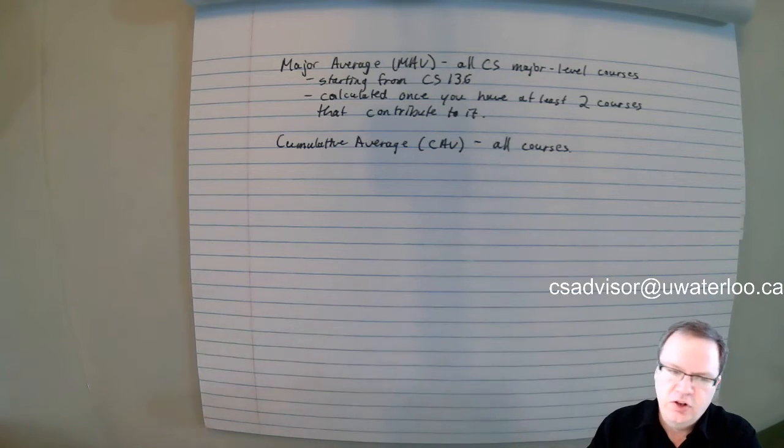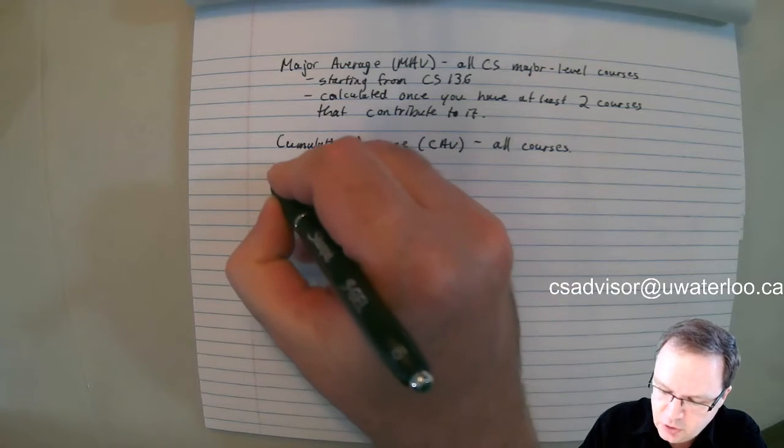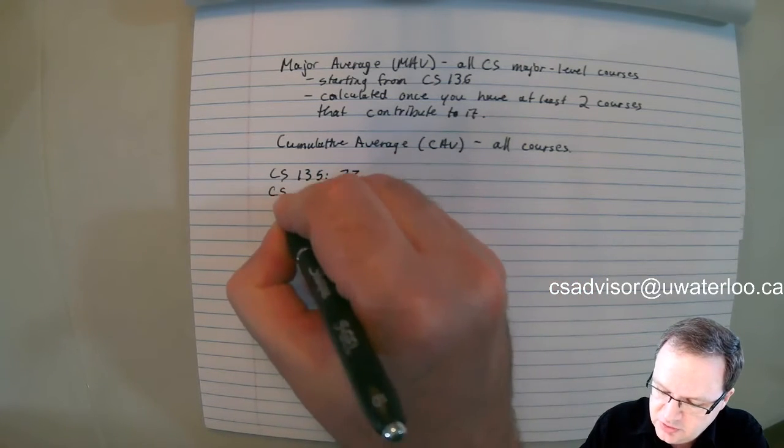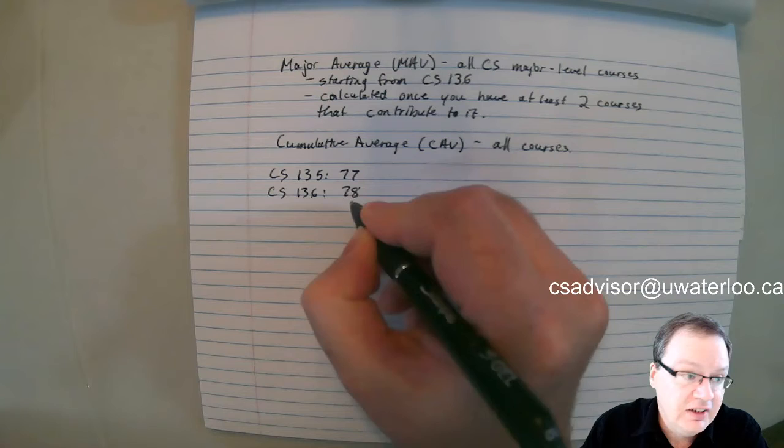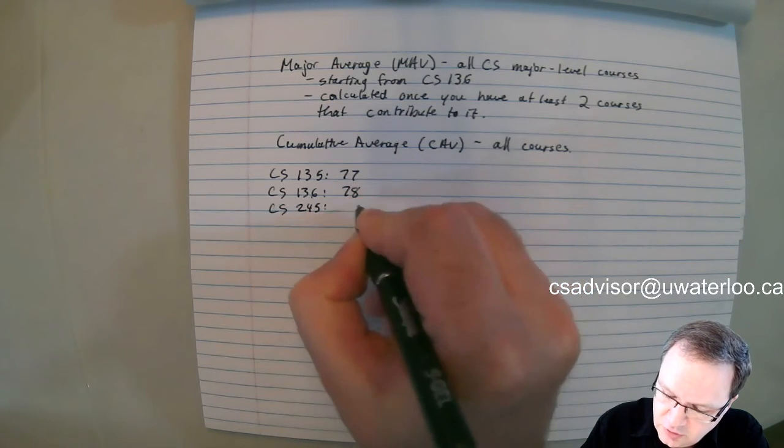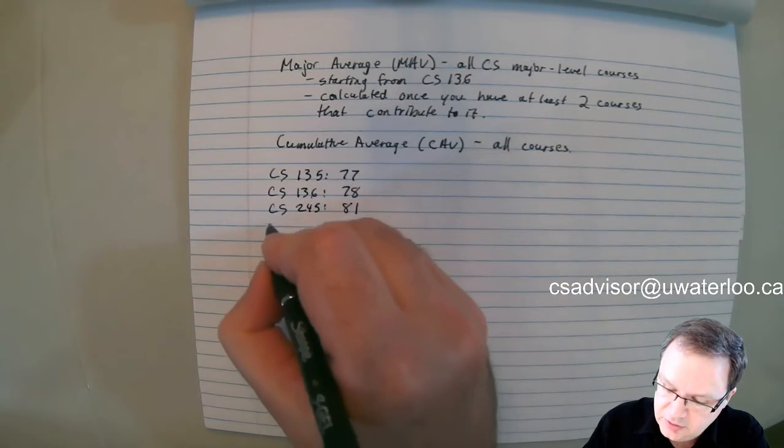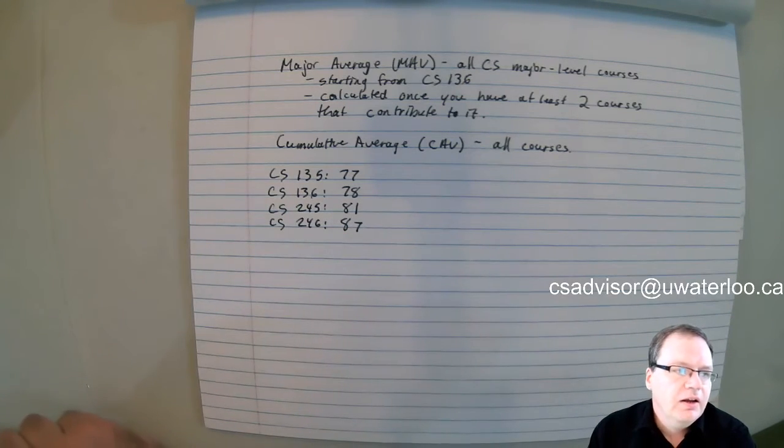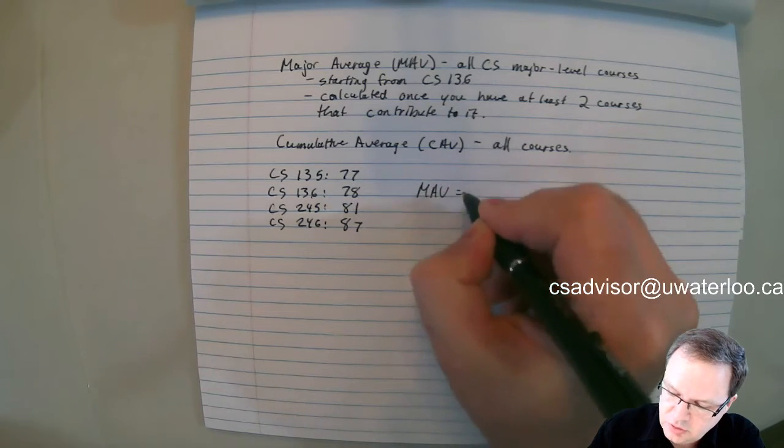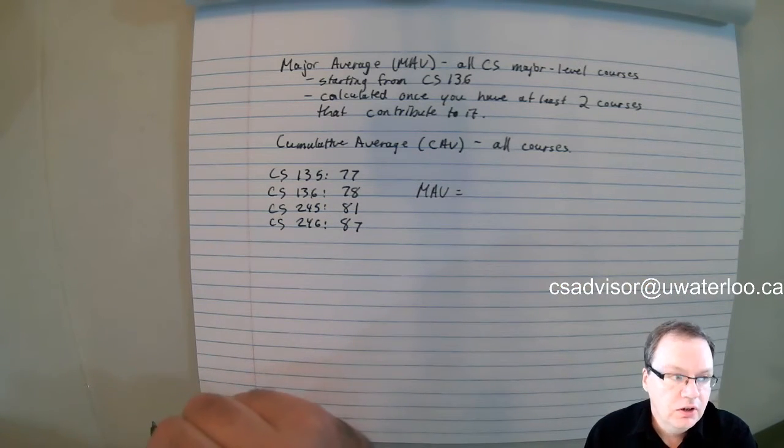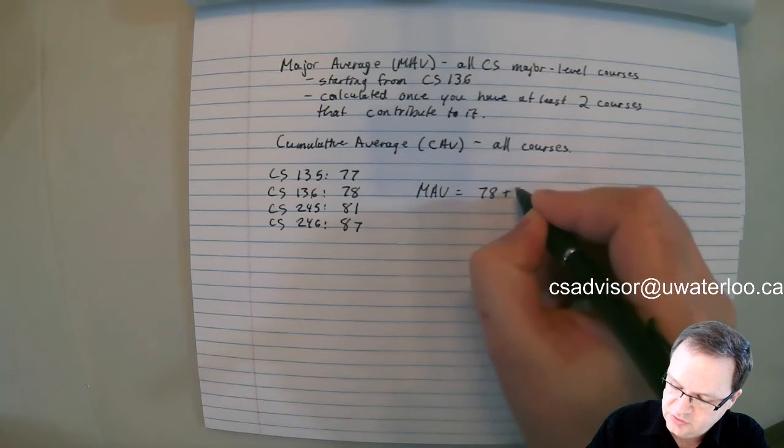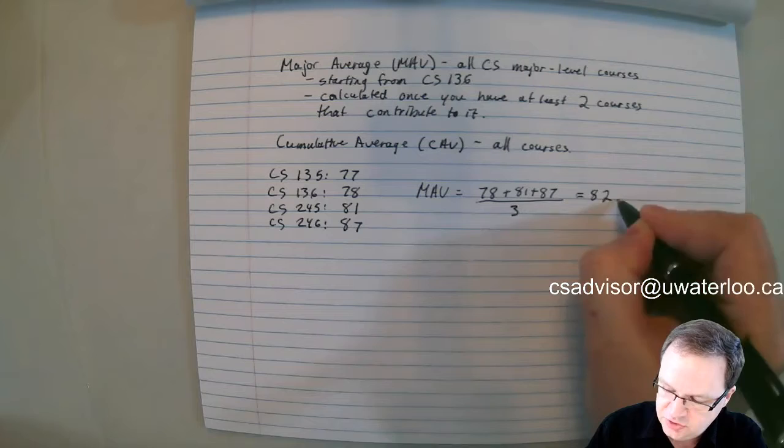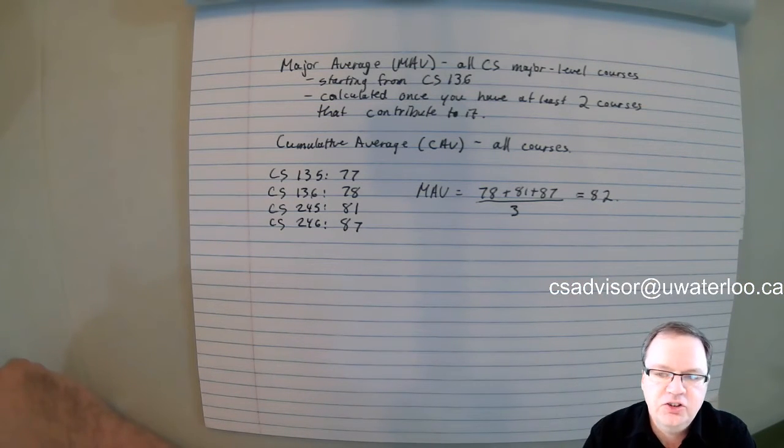So let's focus for this video on the MAV and let's imagine you have the following grades. Let's say you have a grade of CS 135 of 77, CS 136 of 78, CS 245, 81, and CS 246, 87. So to calculate the MAV, remember CS 135 is not included, so it's 78 plus 81 plus 87 divided by 3 and that happens to work out to 82. So hopefully that's the kind of calculation we're all used to.